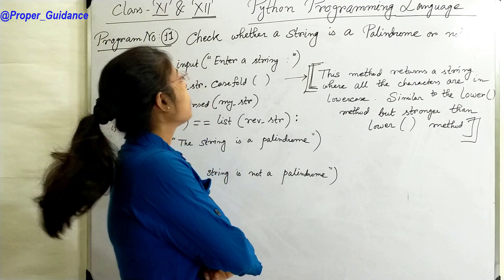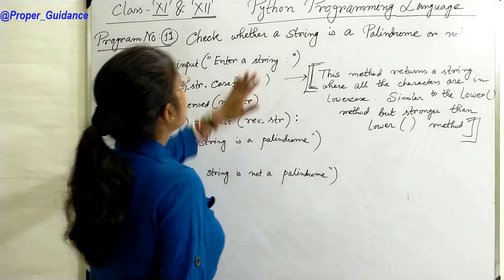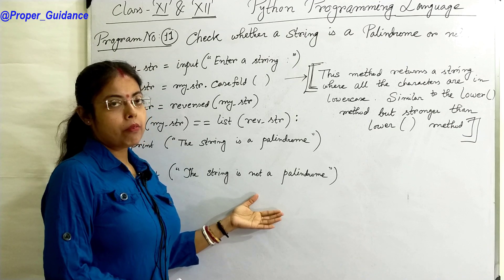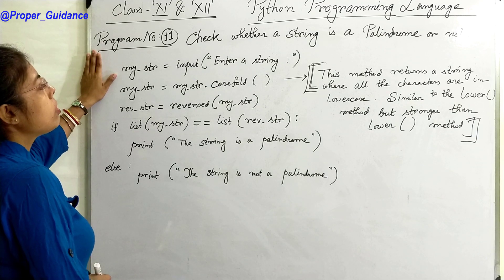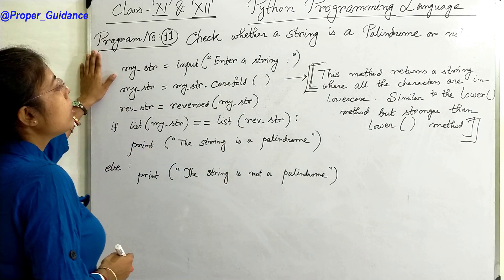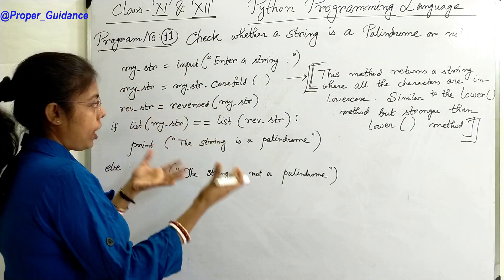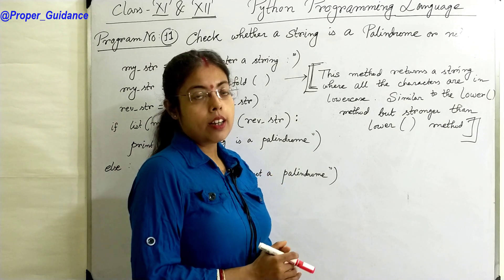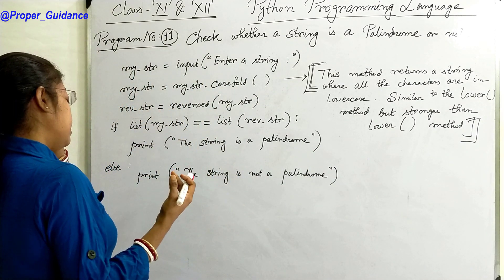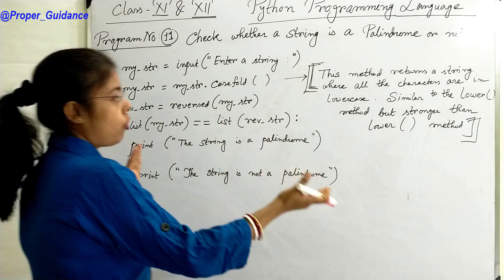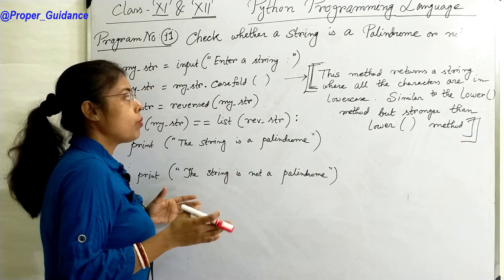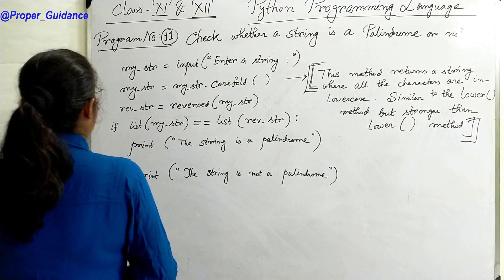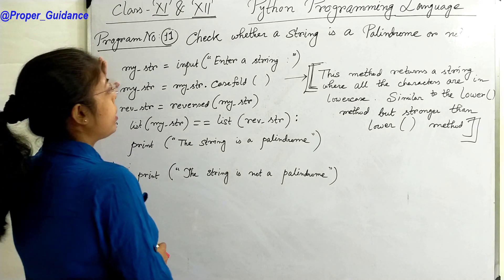Welcome to my channel, The Proper Guidance. Today we will learn program number 11, which is about palindrome. In our previous classes we did the palindrome program for an integer. Now we will discuss a string palindrome. You take a string input, check its reverse, and if the string and the reverse string are equal, we say it is a palindrome; otherwise, it is not a palindrome.